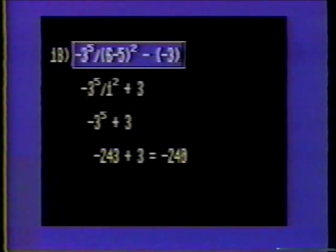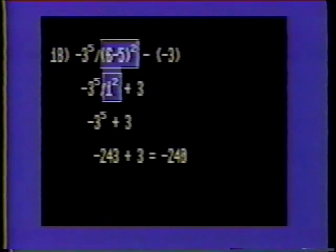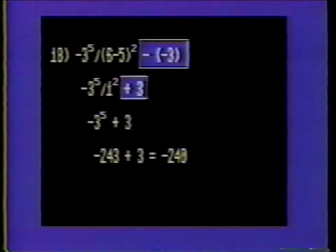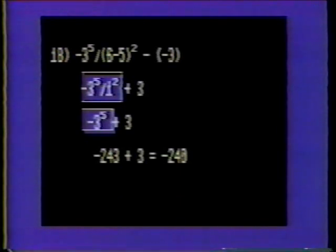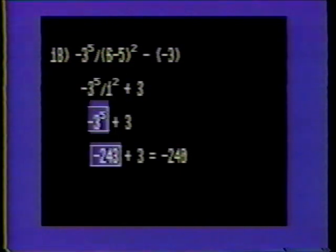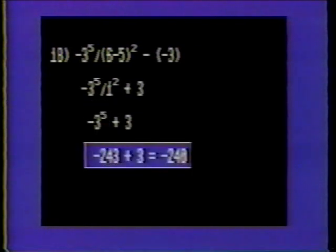Number eighteen: negative three to the fifth power divided by six minus five squared minus negative three. Solve for the items in parentheses first. Subtracting five from six yields one. Now we have one squared. Remember that minus a minus is a positive; thus, minus negative three is positive three. Negative three raised to the fifth power divided by one squared is negative three raised to the fifth power, because one times one is one. Negative three to the fifth power is negative 243. Negative 243 plus three is negative 240.